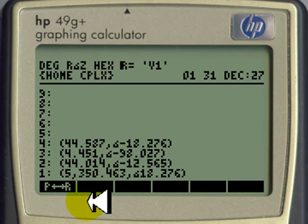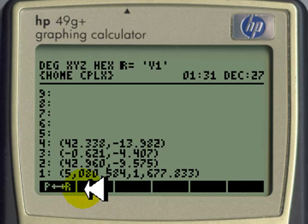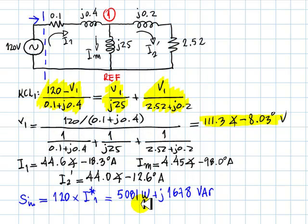And then I convert that to rectangular mode and I have P and Q: 5080 watts with 1678 vars. That is input complex power: 5000 watts and 1700 vars active power, reactive power. Thank you very much.